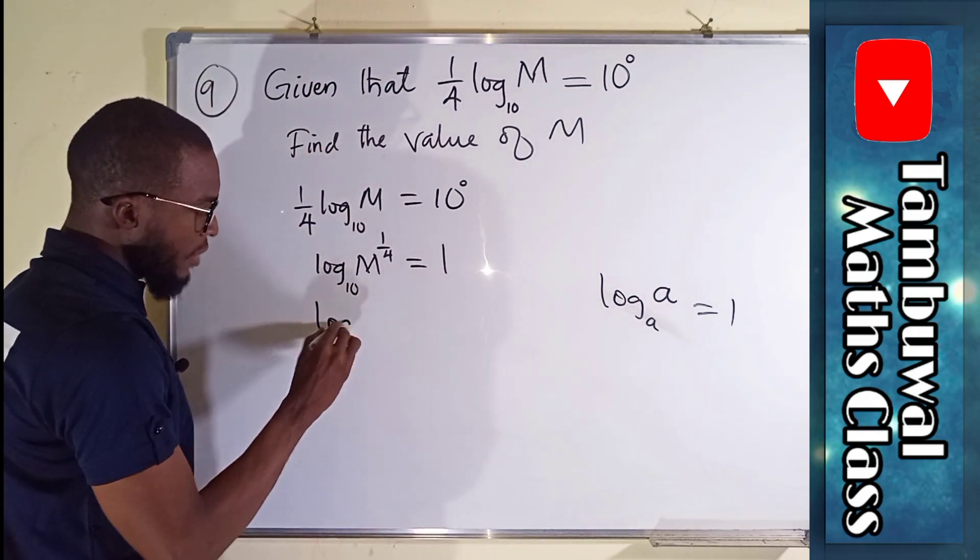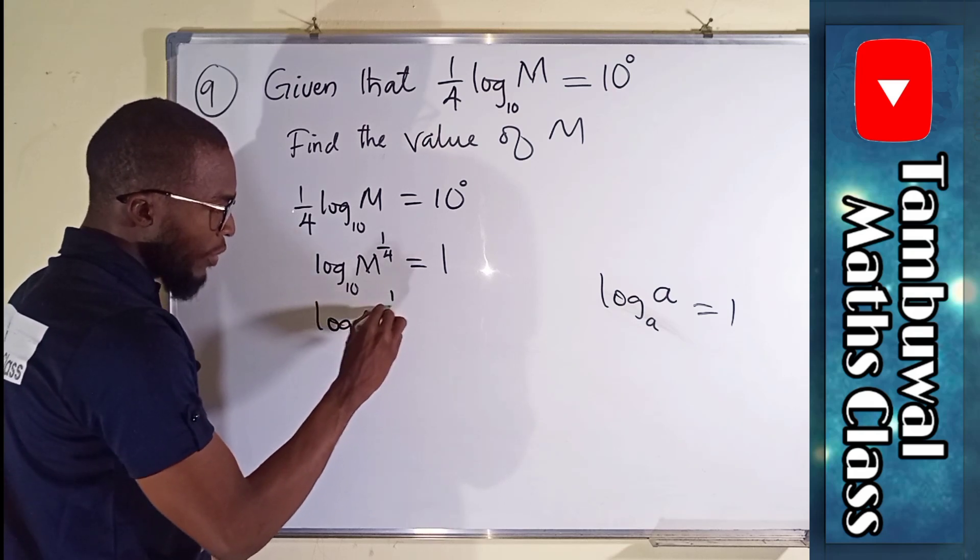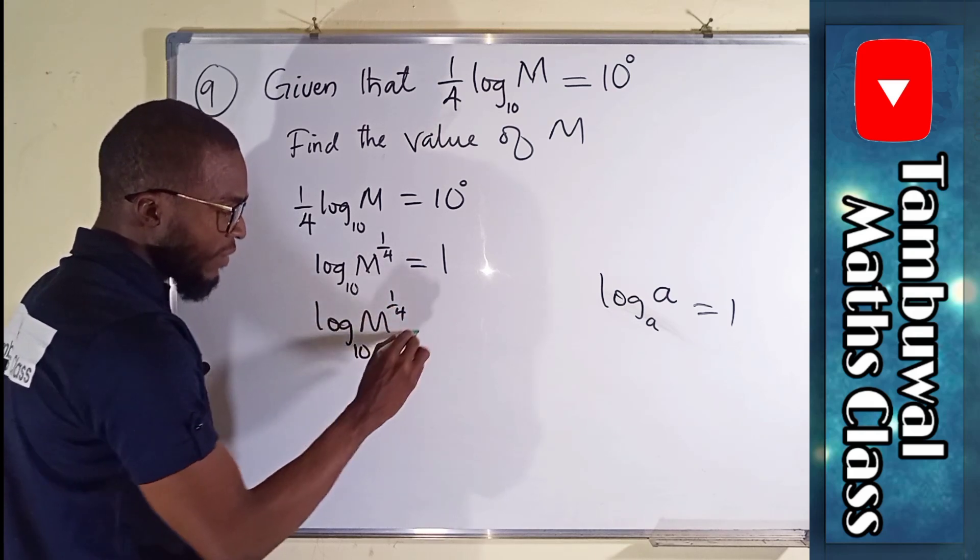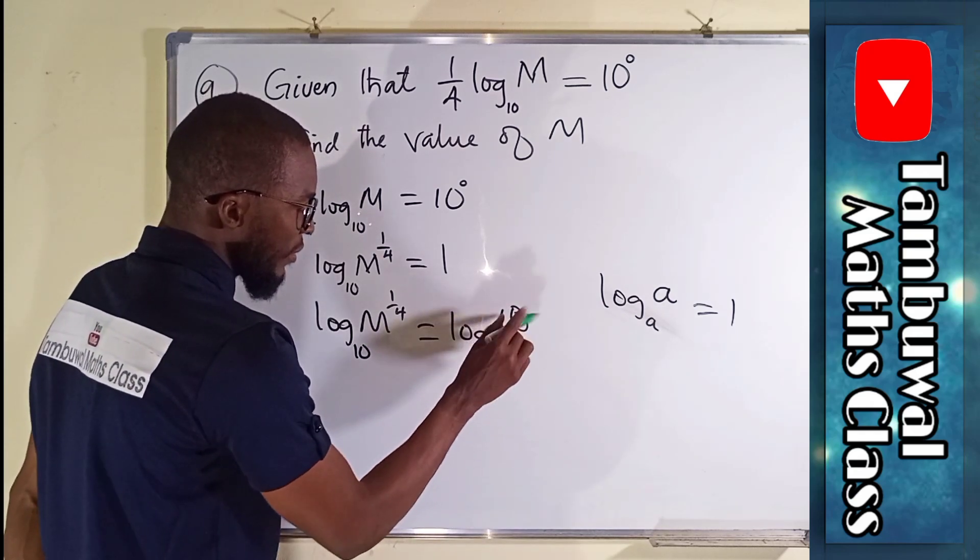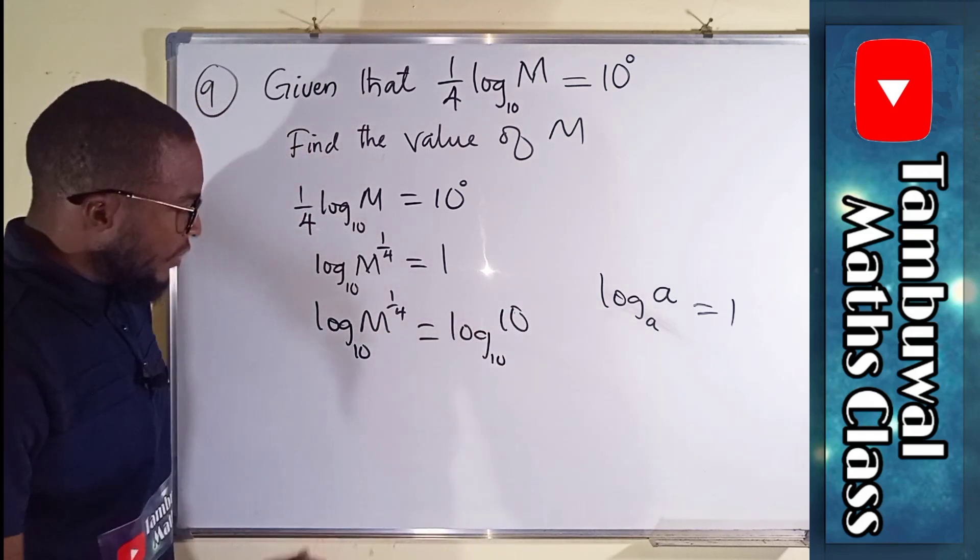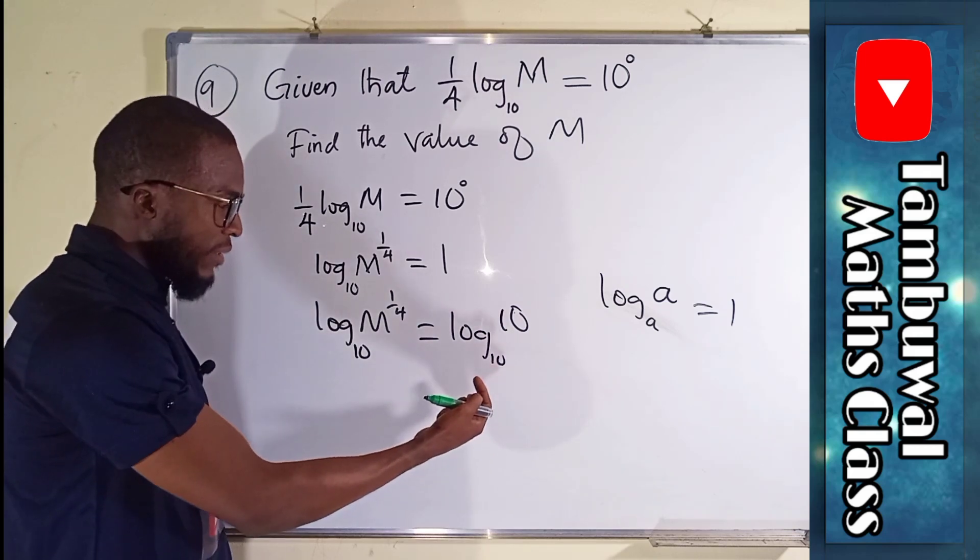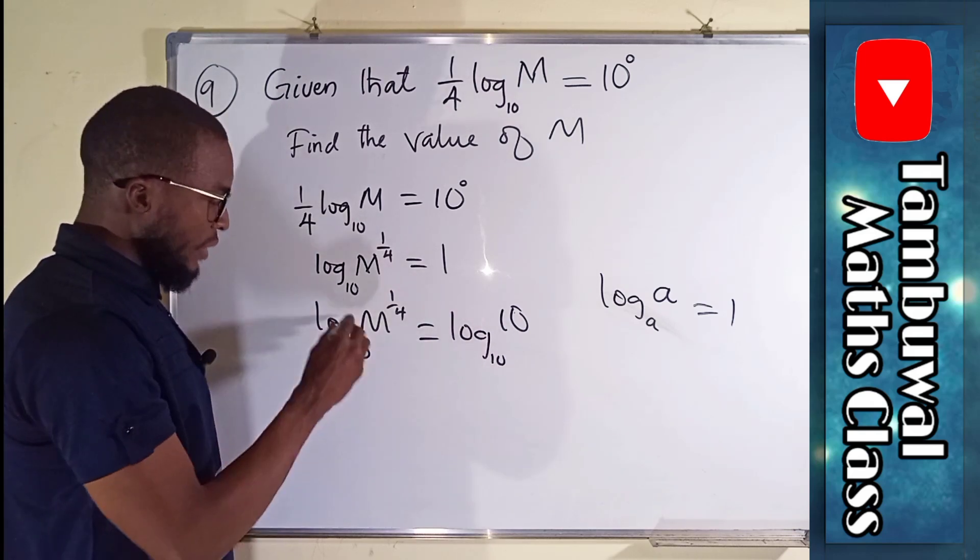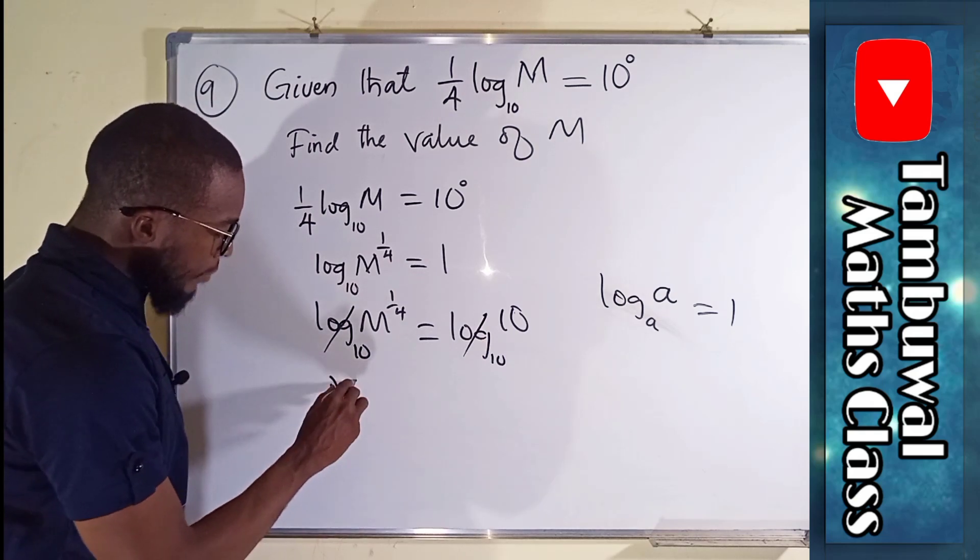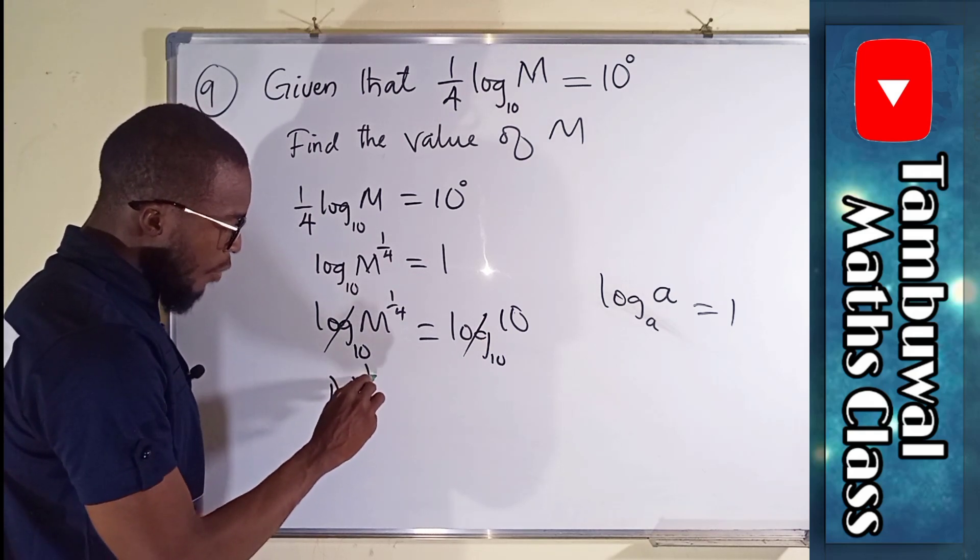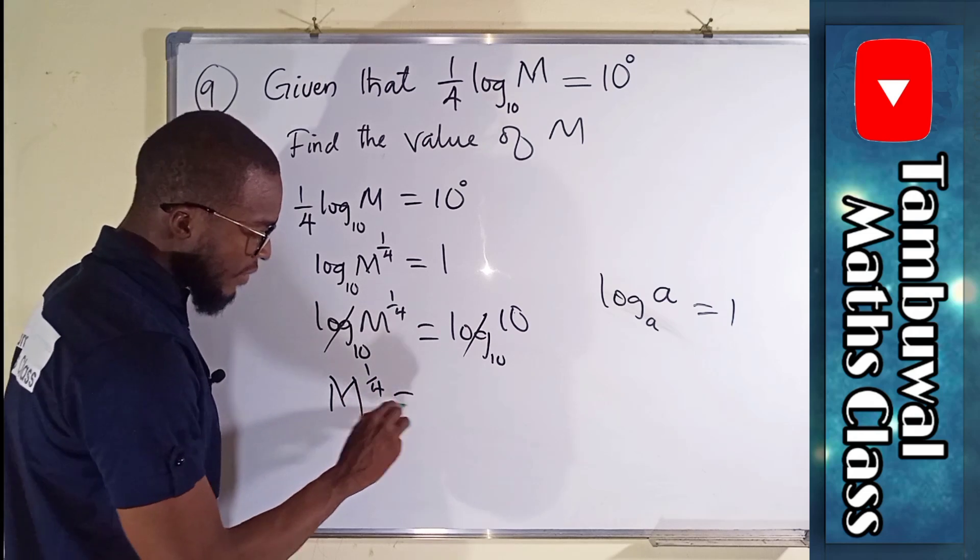So we have log of M power 1 over 4 base 10 is the same thing as log of 10 base 10. Since we have log from both sides, they can cancel out. This log will cancel this log. And M power 1 over 4 is the same thing as 10.